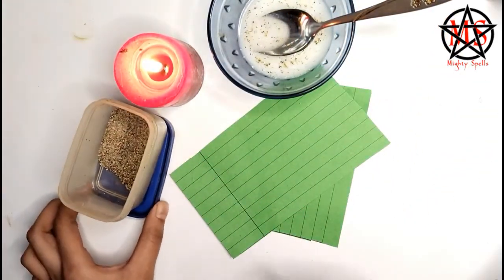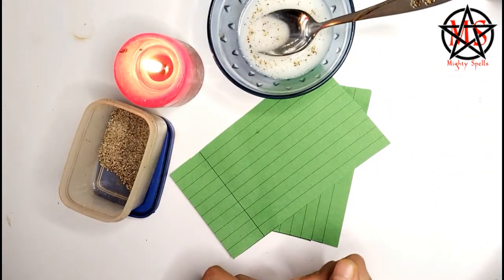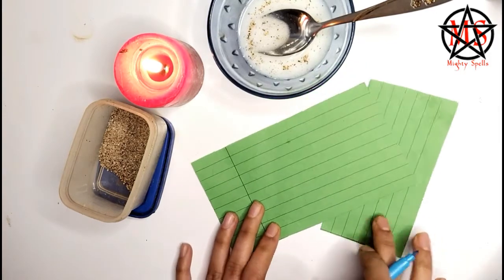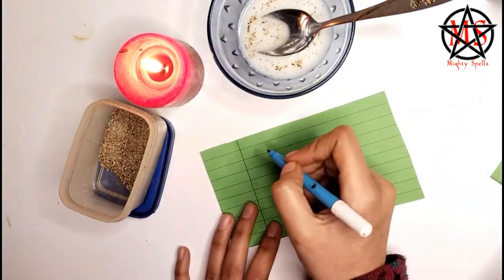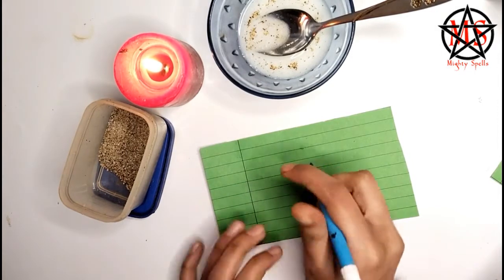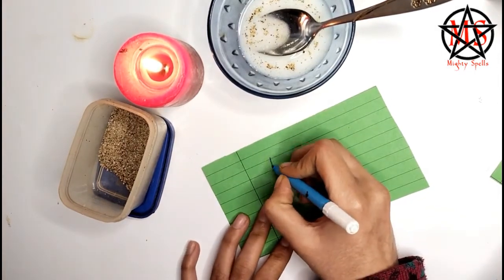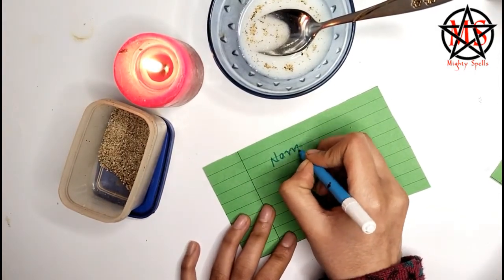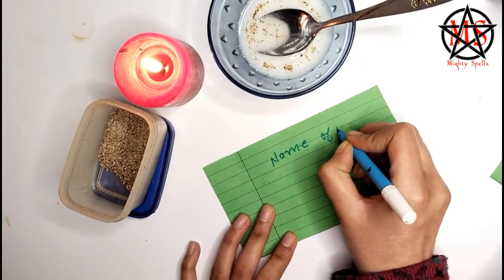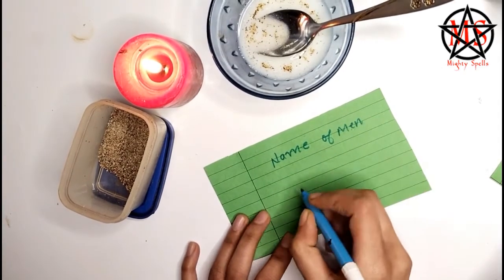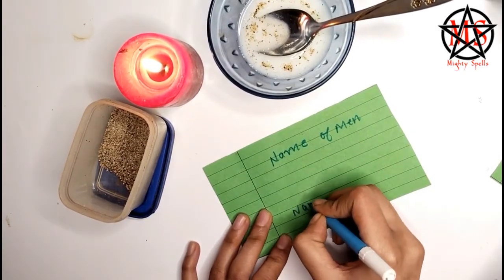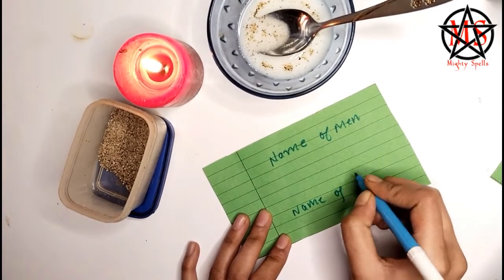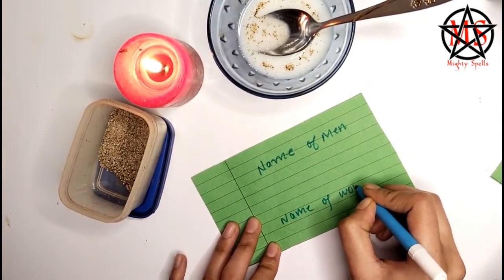Now with the paper you have to write. So firstly you are going to write the name of the man person in the relationship. And on the downside you are going to write the name of the female person in the relationship.